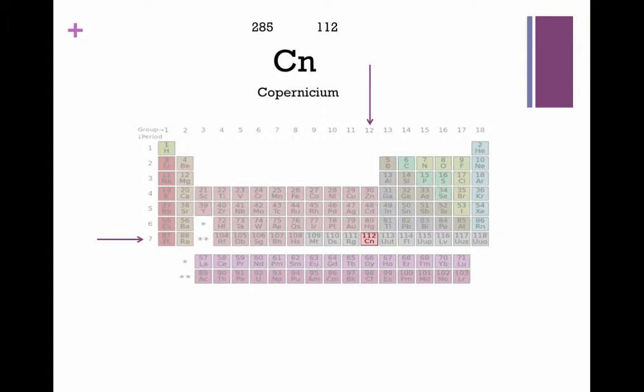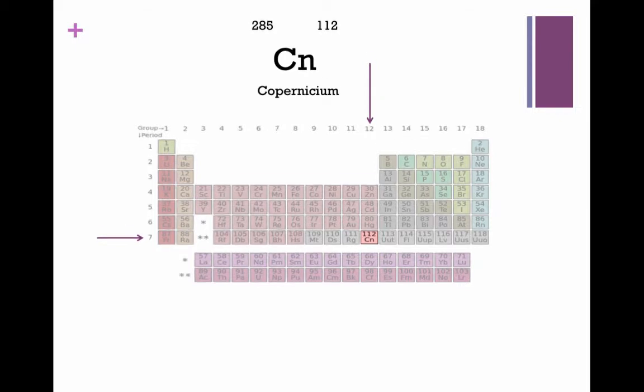Copernicium is a very heavy metal with a density of around 23.7 grams per centimeter cubed in the solid state. A single atom of Copernicium was produced with an atomic mass of 277 grams.